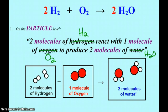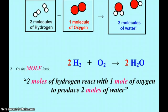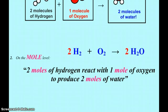The particle level is great — it helps us understand what's going on. However, it's not very practical. I can't tell you to go into the lab and make me two molecules of water. So of course, we have our lovely friend, the mole. Why do chemists use the mole? Because the particles that make up matter are so incredibly small, I need a ginormous number of them to get to a visible amount of material to work with. As a chemist, I like to look at this reaction on the mole level: two moles of hydrogen react with one mole of oxygen to produce two moles of water.